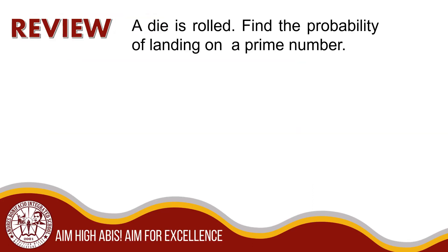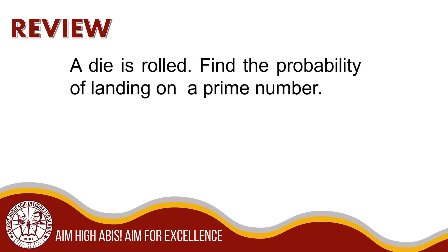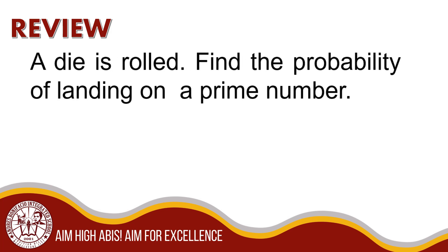Looking back at the previous discussion on how to get the probability of an event, try to answer the following simple problem. A die is rolled. Find the probability of landing on a prime number. The set of numbers on the die is 1, 2, 3, 4, 5, and 6 — so we have 6 possible outcomes. The 3 prime numbers are 2, 3, and 5. Therefore the probability of landing on a prime number is 3 out of 6, or 1 half.